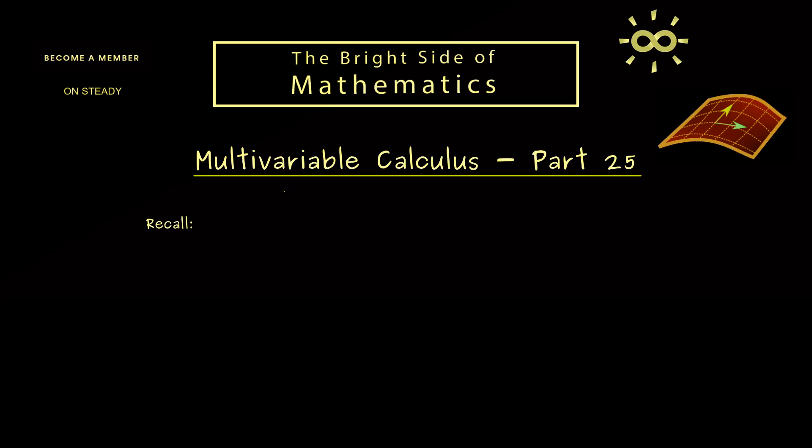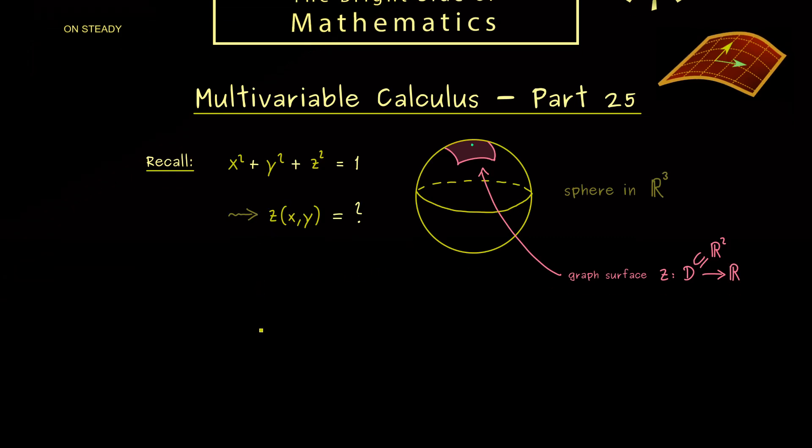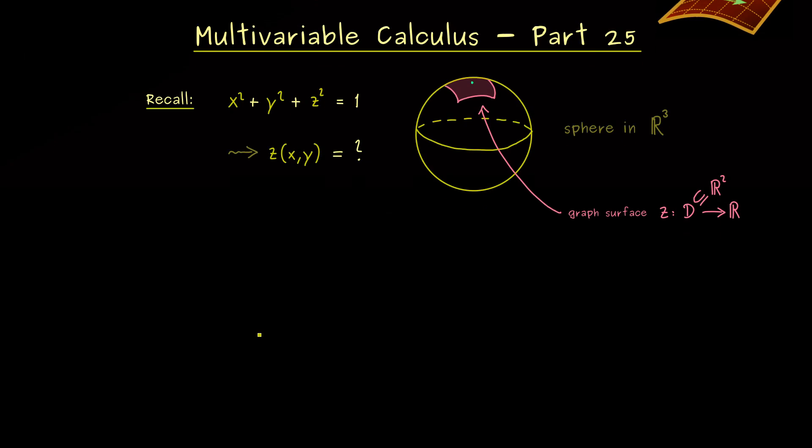Now, from the last video we already know that we can use local diffeomorphisms to rewrite implicit equations. For example, we have discussed if we can solve this equation for the variable z, which simply means can we rewrite one part of the sphere as a graph surface. If that works, we can say that this equation here has implicitly a function z given.